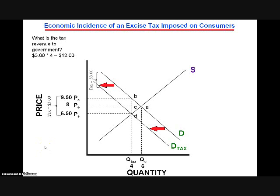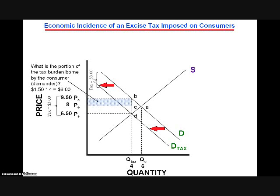Next we can inquire about the distribution of the tax burden. Specifically, what is the portion of the tax borne by the consumer? This is indicated by the difference between the effective price confronted by the consumer, P subscript C, which is $9.50, and the original equilibrium price, P subscript E, which is $8, multiplied by the output in the taxed market, Q subscript tax, which is 4. So $9.50 minus $8 equals $1.50, times the quantity 4, which is $6. Consumers bear $6 of the total burden of this tax. Graphically, this is depicted as the shaded rectangle PC, PE, C, B.